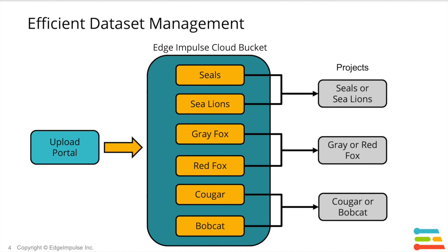Once the images are in the storage bucket, we can then seed different projects with different subsets from the org's larger dataset collection. This makes things really efficient in terms of data management. You can source a project's dataset from this central repository instead of having to invest significant time and effort manually uploading and managing individual datasets for each of your projects.